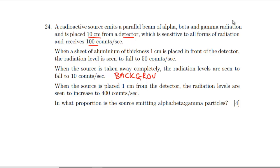When the source is placed 1 cm from the detector, the radiation levels increase - so it is in air then, they could have said that. So that must mean alpha equals 300. Which means this drop here is going to be because of beta, so beta must be 50. So gamma must be 40. What proportion are those? We've got 300 to 50 to 40, so we've got 30 to 5 to 4.